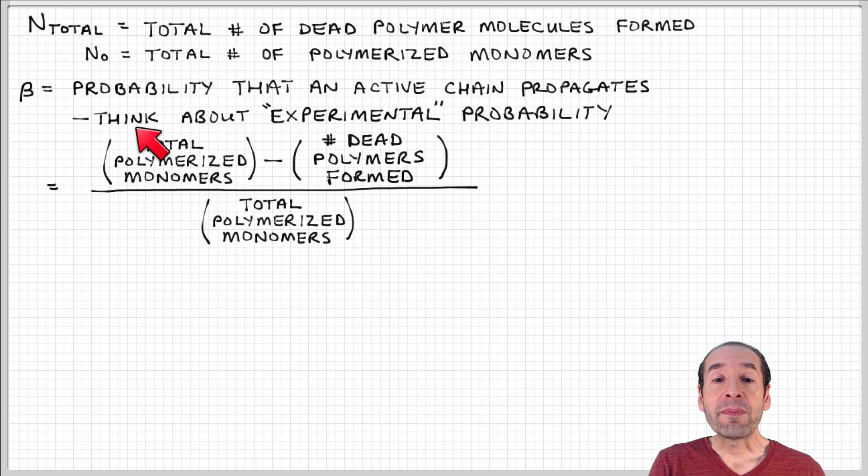So what I'm expressing here by this total number of polymerized monomers is the total number of events, the sum of propagation events and termination events. I'm counting all these possible outcomes that could have happened to a monomer that's incorporated into a chain, whether it's a growing chain or a dead chain.